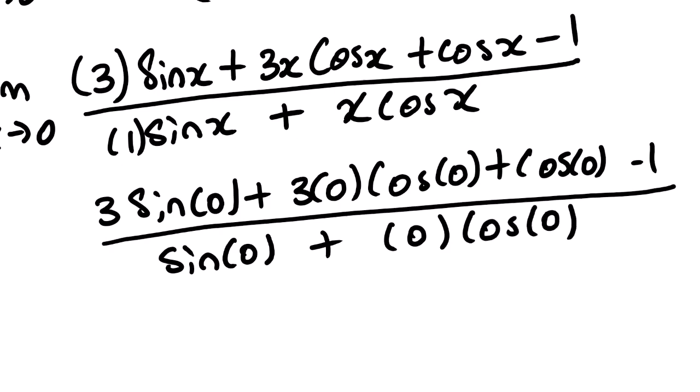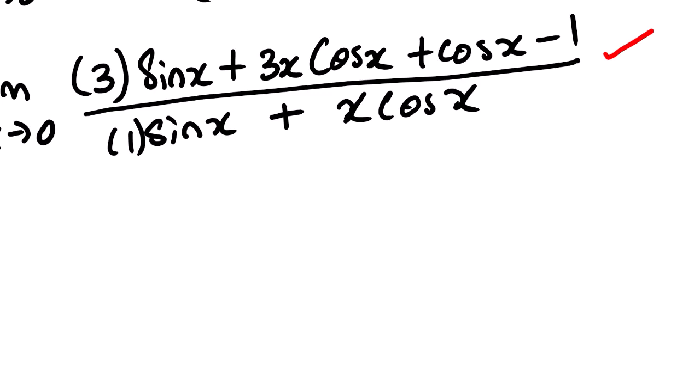We can see that 3·sin(0) equals 0, and 3 times 0 times cos(0) is also 0. Then cos(0) is 1, minus 1 is 0, so the numerator is 0. The denominator: sin(0) is 0, plus cos(0) times 0 is also 0. So we still have an indeterminate form, and we need to apply L'Hôpital's rule again.